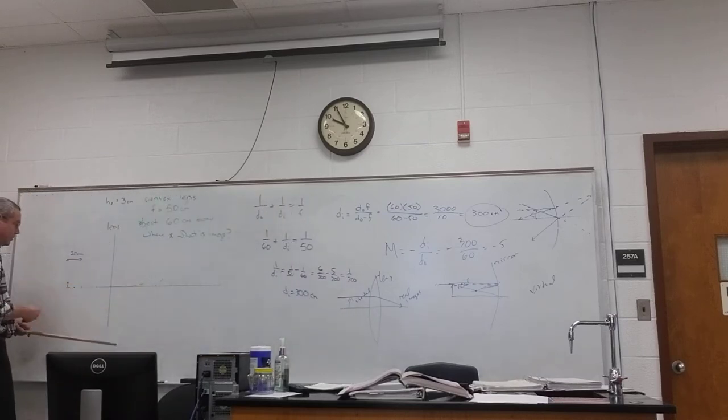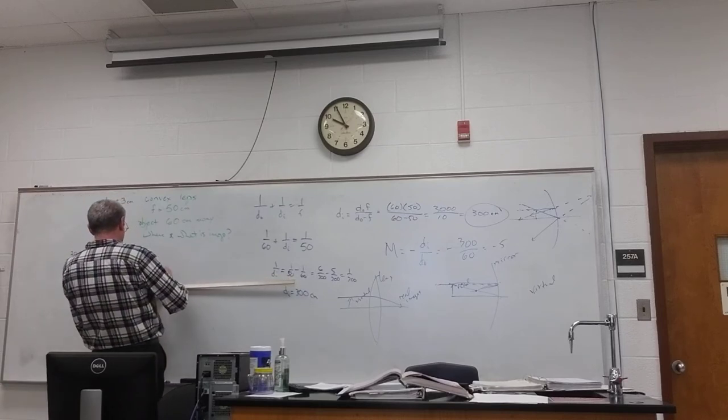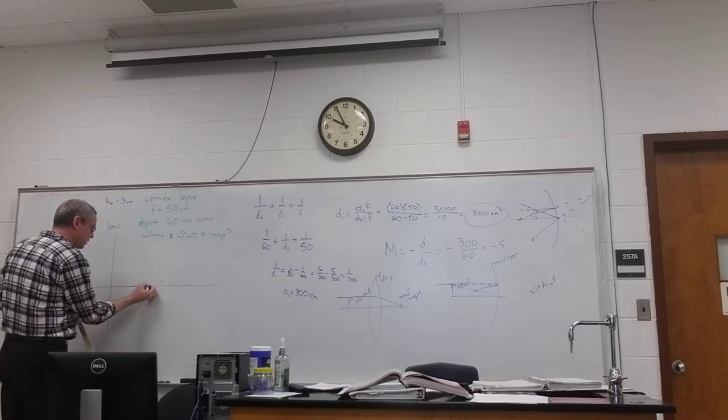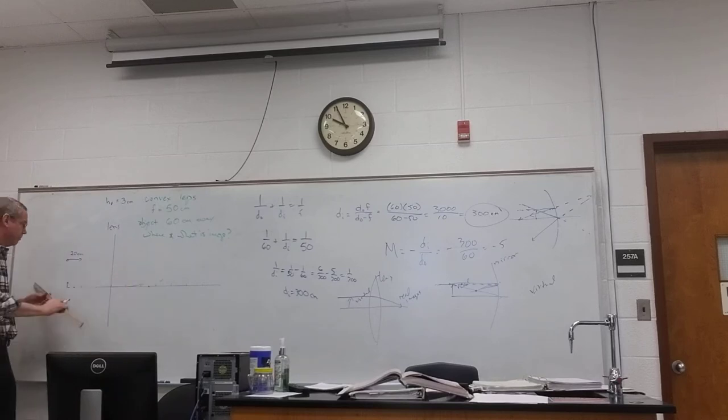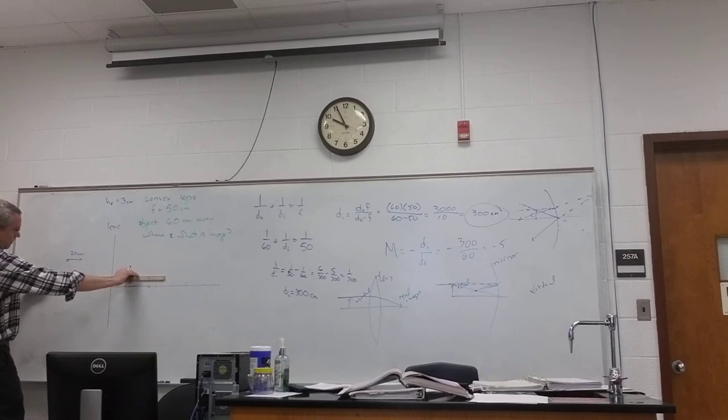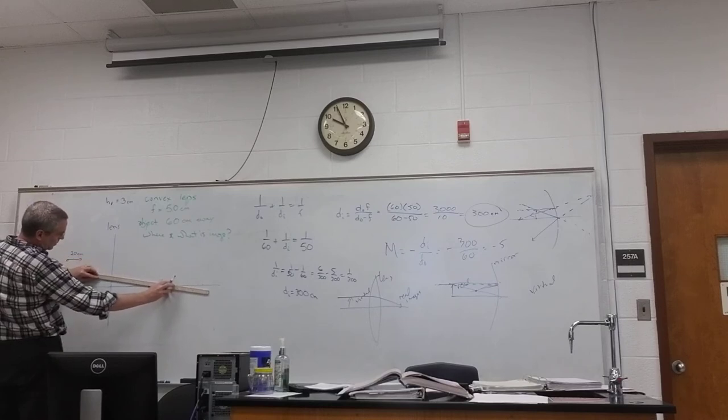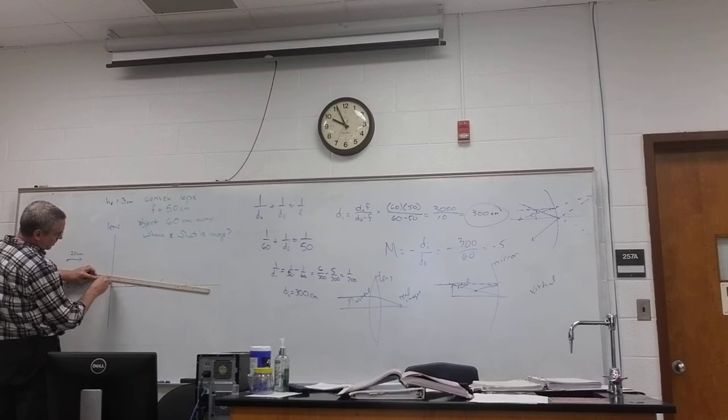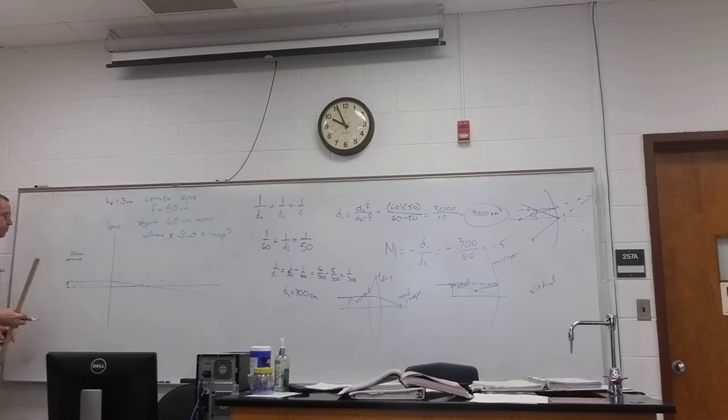So much easier on paper. All right. So there's got to be a focal point over here also. The focal point over here is up there. All right. So light that's coming in parallel should go through the focal point. Is this parallel to this line right here? It's going to hit the lens and then it's going to go through here.